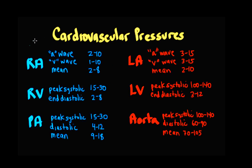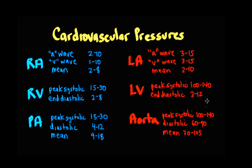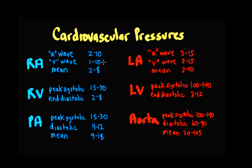It's also important to recognize that the right side — the right atrium, right ventricle, and pulmonary artery — has generally a lower pressure than the left side — the left atrium, left ventricle, and aorta. And that has important clinical considerations that we'll discuss later.